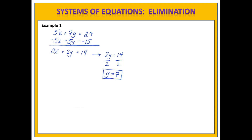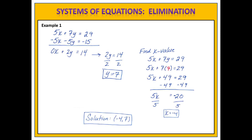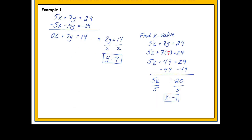In our solution, the y value will be 7. We also need to find the value for x. We'll go back to our original equations — we had 2 of them, and it doesn't matter which one we use. I'm going to use the first one. We know that y is 7, so we substitute 7 in place of y and we solve for x. We subtract 49 from both sides, divide both sides by 5, and we find that x is equal to negative 4. The solution is x equals negative 4 and y equals 7, written as the ordered pair negative 4 comma 7.